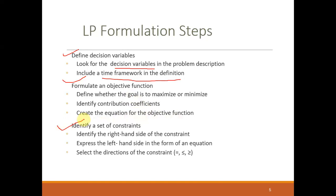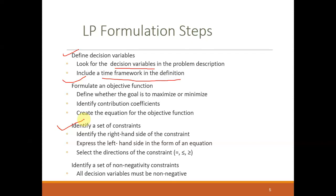Once your decision variables and objective function are decided, you identify the set of constraints. First identify the right-hand side of each constraint, then express the left side as an equation, and decide the direction — equal to, less than or equal to, or greater than or equal to. A key assumption is that all decision variables must be non-negative, which is also a constraint.